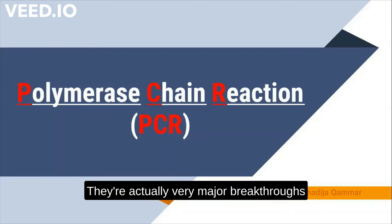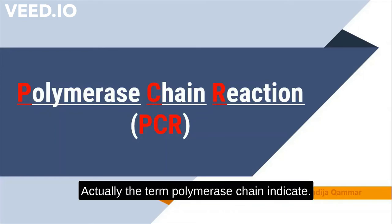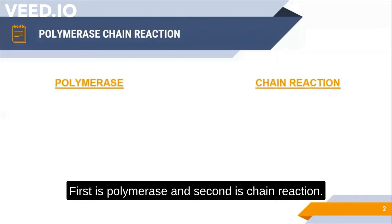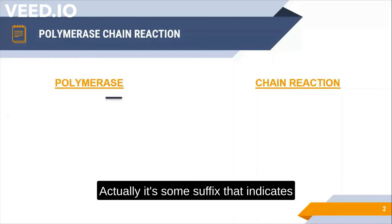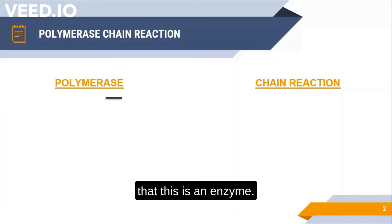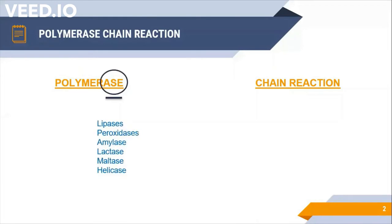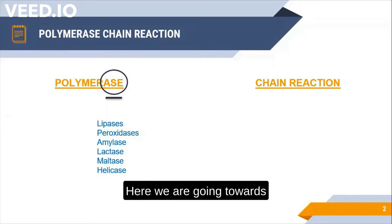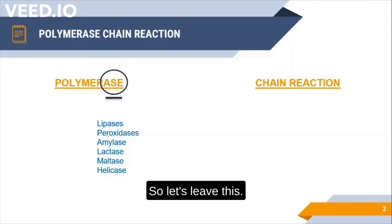Before going into detail, let's discuss what the term 'Polymerase Chain Reaction' indicates. It consists of two parts: 'polymerase' and 'chain reaction.' The suffix '-ase' indicates an enzyme — for example, lipase, peroxidase, amylase, lactase, helicase are all enzymes identified by this ending.